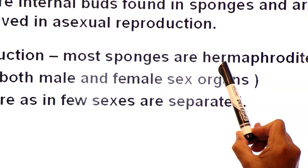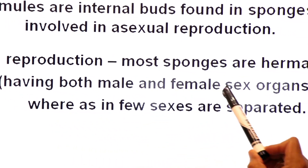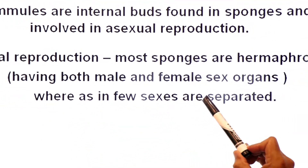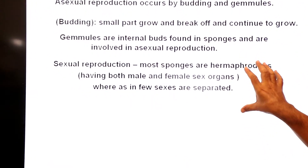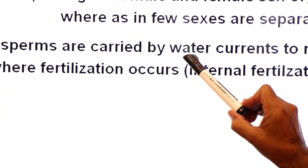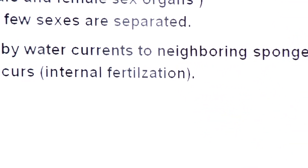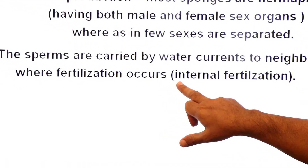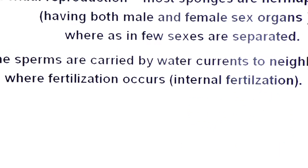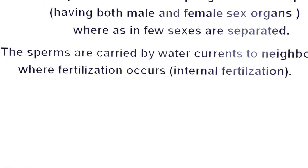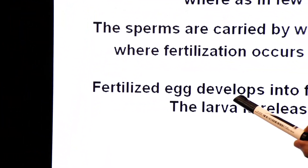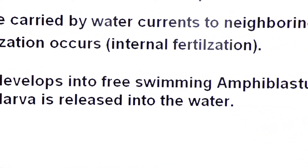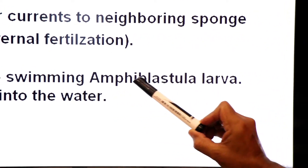In sexual reproduction, most sponges are hermaphrodite, having both male and female sex organs, whereas in a few, sexes are separated. Sperms are carried by water currents to the neighboring sponge where fertilization occurs in the mesenchyme — making fertilization internal. The fertilized egg develops into a free-swimming larva known as the amphiblastula larva.